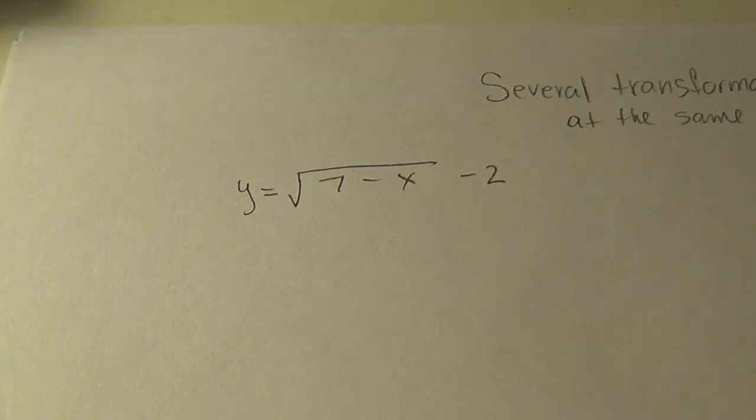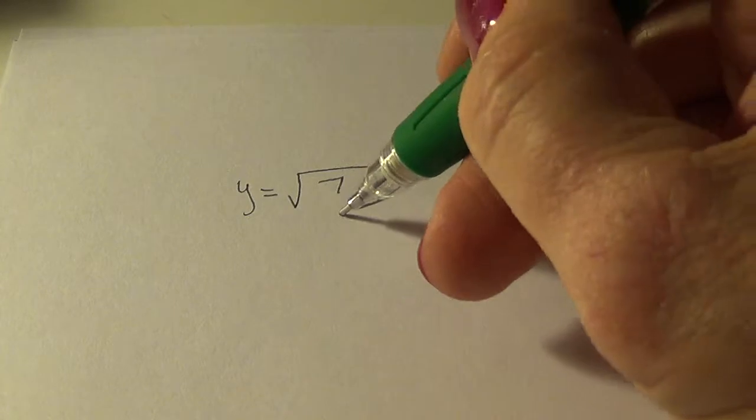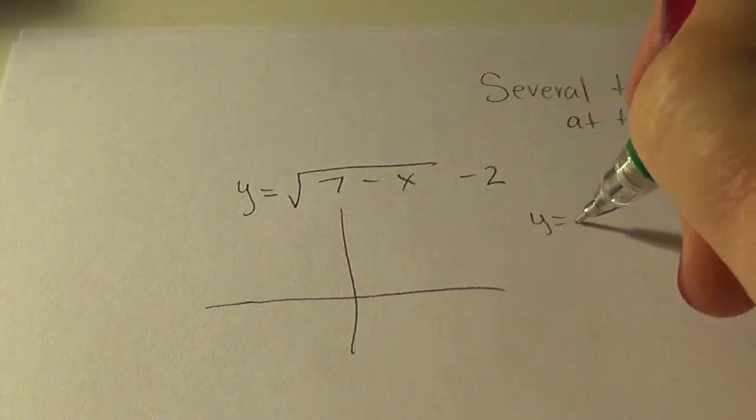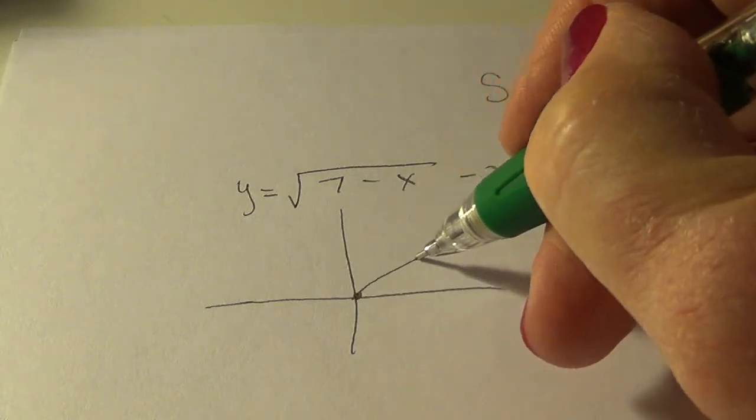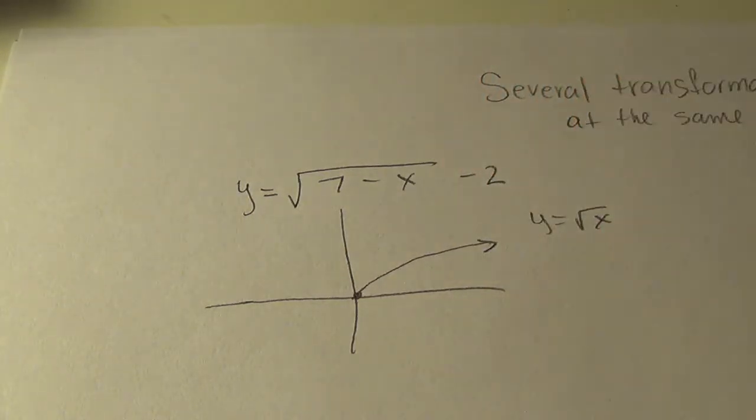Alright, in order to get this we have to start with the parent function. The parent function is y equals square root of x. And so that starts abruptly here and goes off like that.